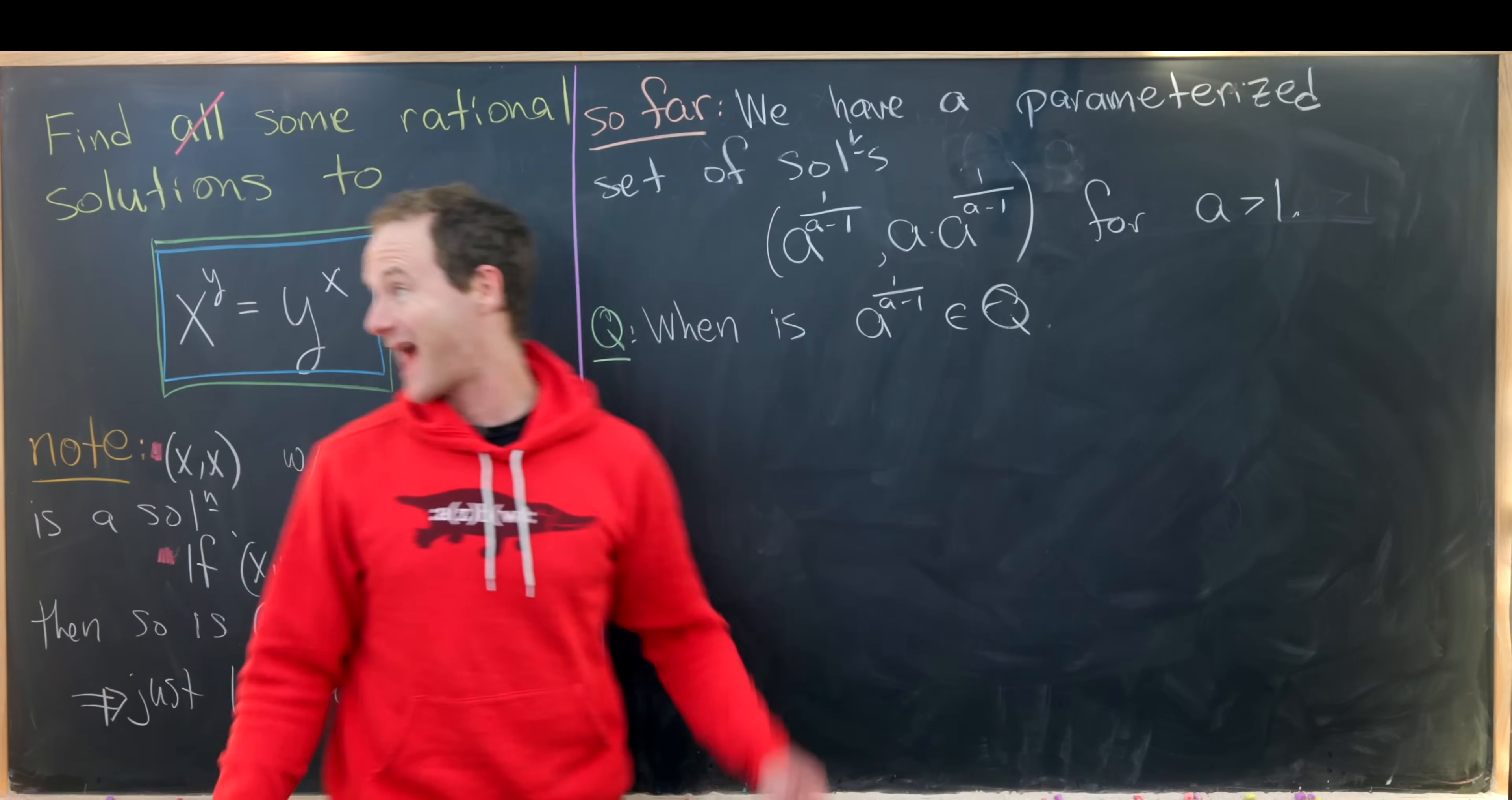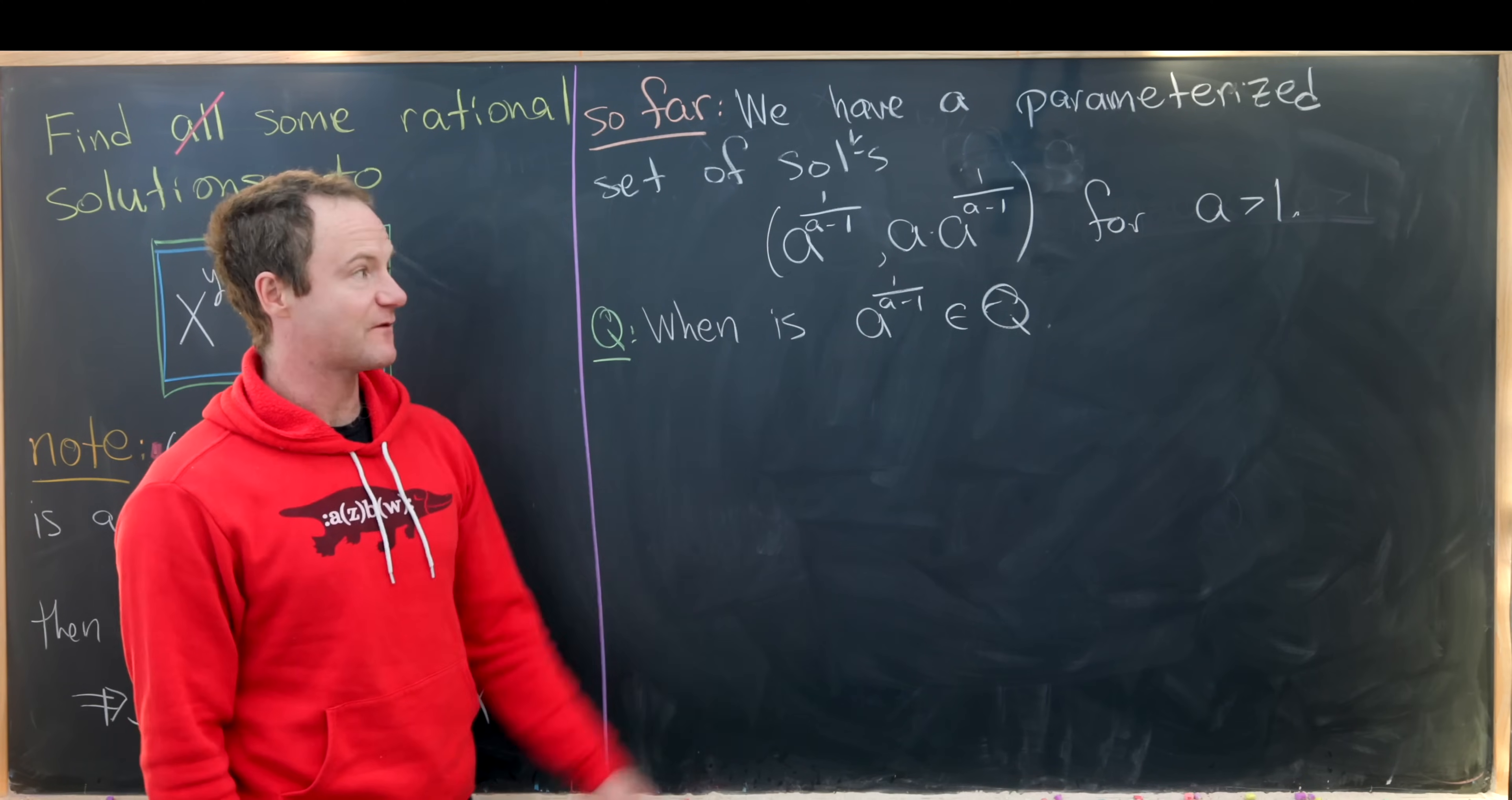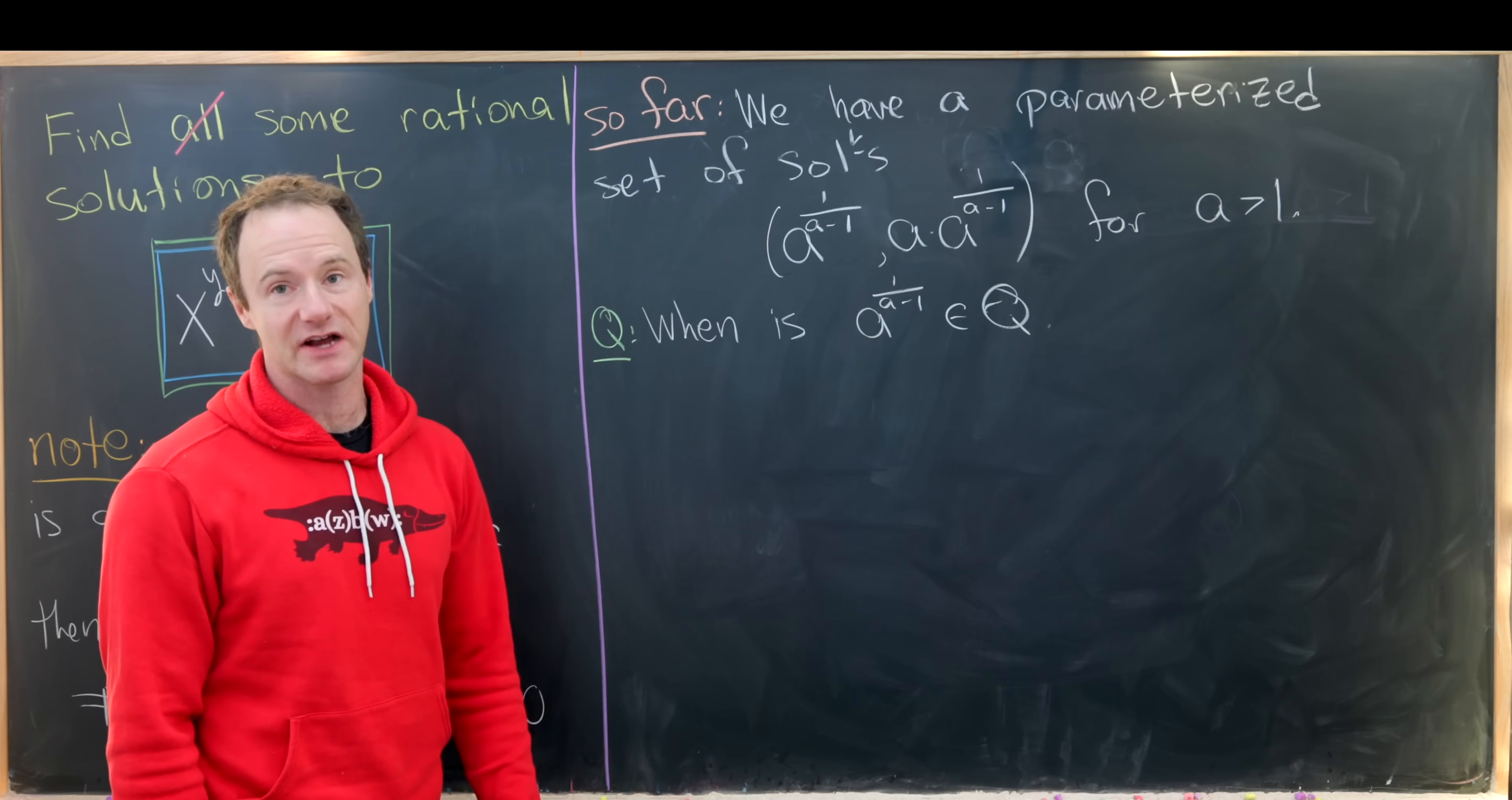So in the last board, we found out that our equation has a parametrized set of solutions that take the form a to the one over a minus one, and then a times a to the one over a minus one for a bigger than one. And this is going to be for all real numbers a bigger than one. But that gives us real solutions, and we want rational solutions. So that kind of finishes us up with the question, when is this object a to the one over a minus one a rational number?